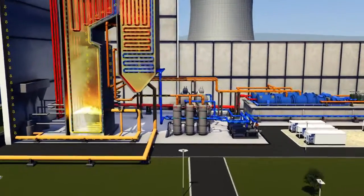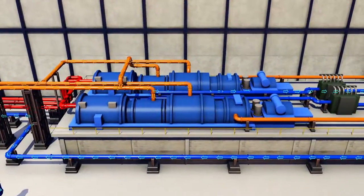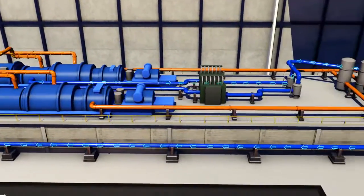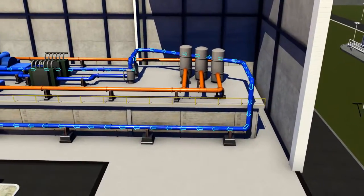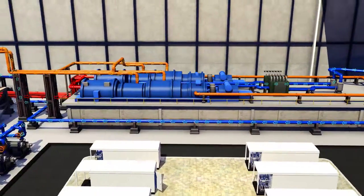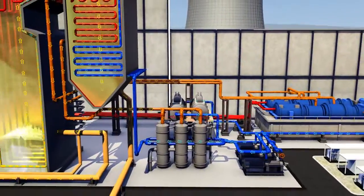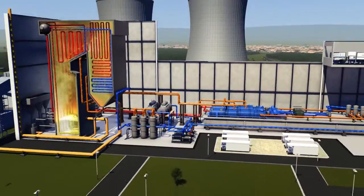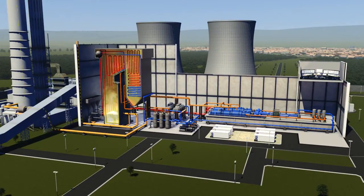Well-balanced water chemistry is vital to optimising the efficiency and availability of boiler plant in power station applications. If the plant chemistry is allowed to vary from specified limits, expensive plant outages running into millions of dollars per day can occur. In this animation we'll look at some of the key parameters that can be measured using ABB's Navigator continuous water analysers.